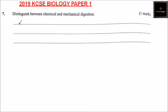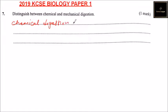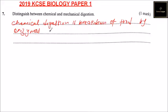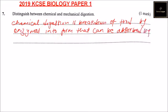Question number seven: distinguish between chemical and mechanical digestion. Chemical digestion is a breakdown of food by enzymes into a form that can be absorbed by the body.